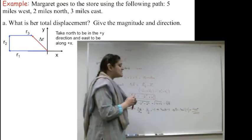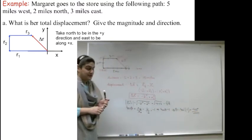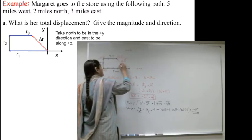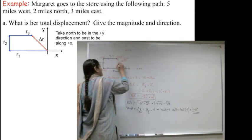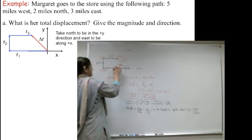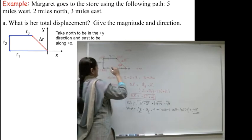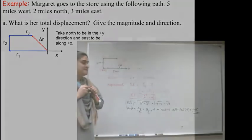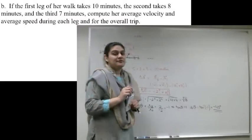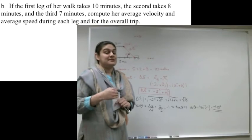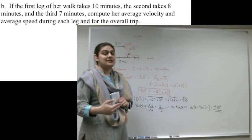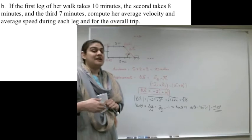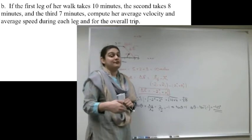The minus 45 degrees means the angle is measured in that direction — we indicate the angle rather than a negative sign. Now for Part B: if the first leg takes ten minutes, the second leg takes eight minutes, and the third leg takes seven minutes, compute her average velocity and average speed during each leg and for the overall trip.